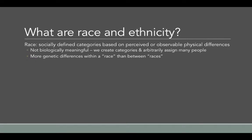Now let's think about race and ethnicity — terms that are related but distinct. Your book actually refers only to ethnicity, but when it does that, it includes what we typically think of as race. Race is a socially defined set of categories based on perceived or observable physical differences — we often point to skin color, hair texture, nose shape, eye shape, lip shape, and other physical features on the face that suggest someone is of a particular racial group.